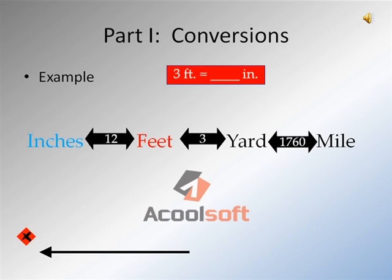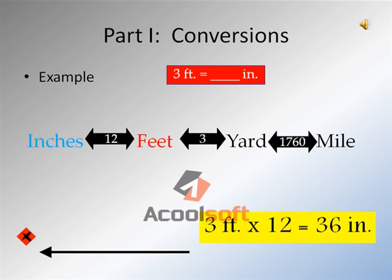Using the arrow at the bottom, because we went to the left, we're going to do a multiplication problem. We're going to use the three that was given to us, as well as the number between inches and feet, which is twelve. As you can see in the yellow box, three times twelve will equal thirty-six, so three feet is equal to thirty-six inches.